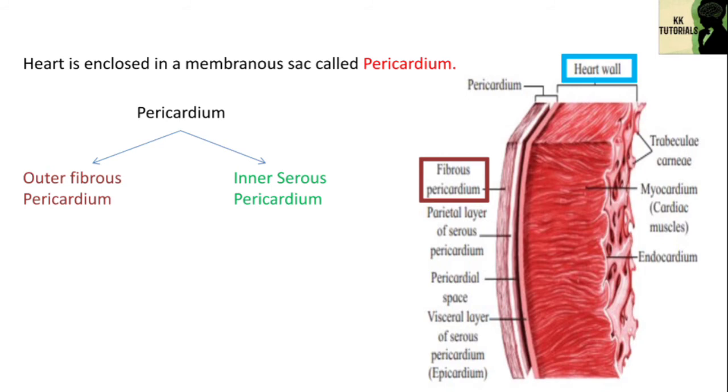Serous pericardium is soft, moist, and elastic. It is formed of squamous epithelium and is further divisible into two layers, as parietal and visceral layer.